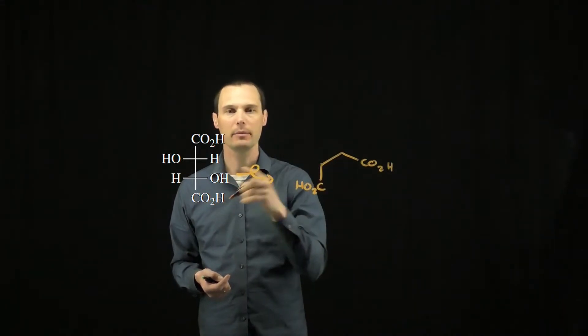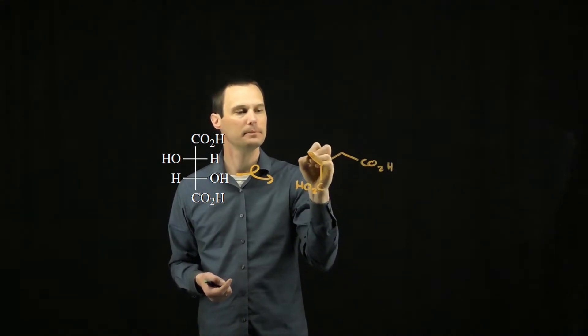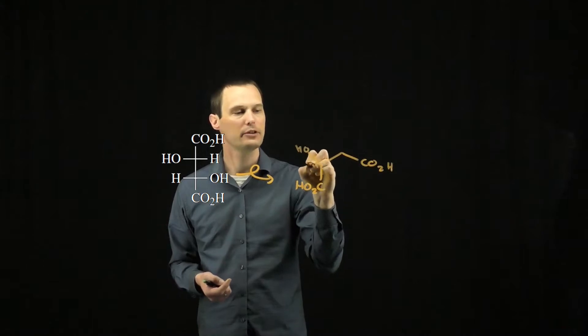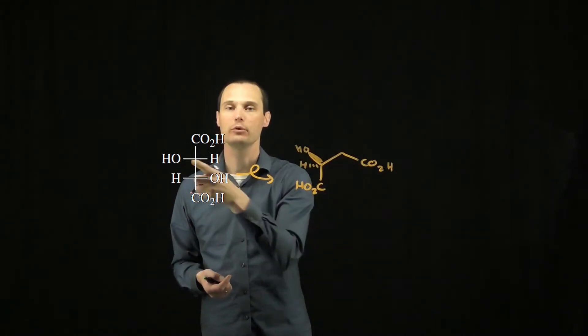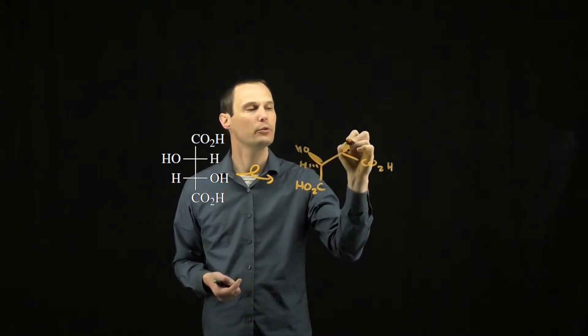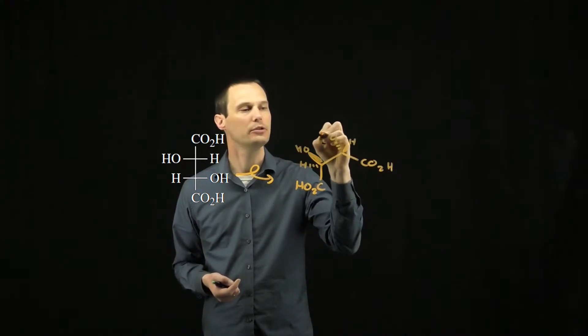That's going to put the carboxylic acid group in the plane. This oxygen on the bottom carbon here will be on a wedge and the hydrogen will be on a dash. And the opposite will be true for the top carbon. The hydrogen will be on a wedge and the oxygen group will be on a dash.